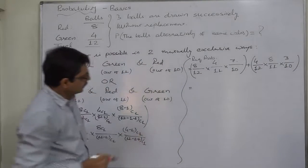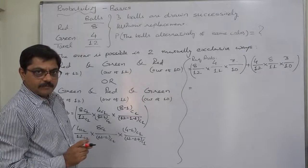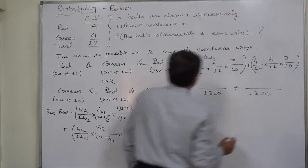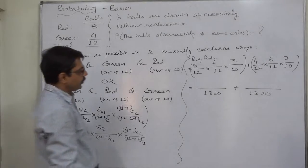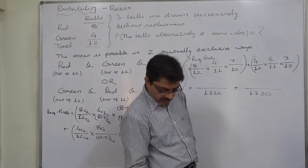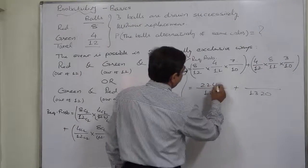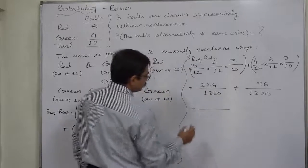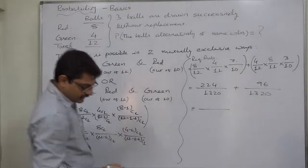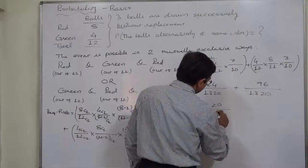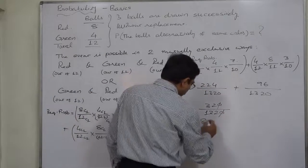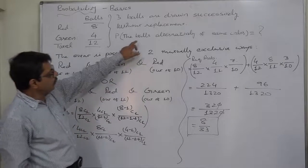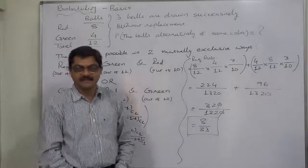The denominator is 12 × 11 × 10 = 1320. The numerator of the first case: 8 × 4 × 7 = 224. The second case: 4 × 8 × 3 = 96. So the total numerator is 224 + 96 = 320. Therefore, the required probability is 320/1320, which simplifies to 8/33. The probability of drawing balls alternately of the same color is 8/33.